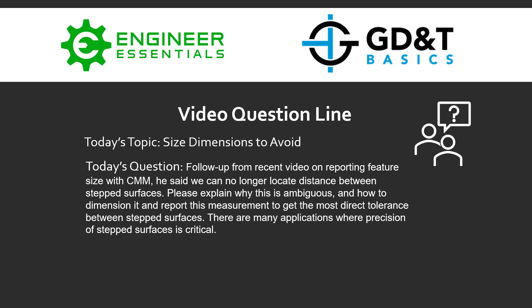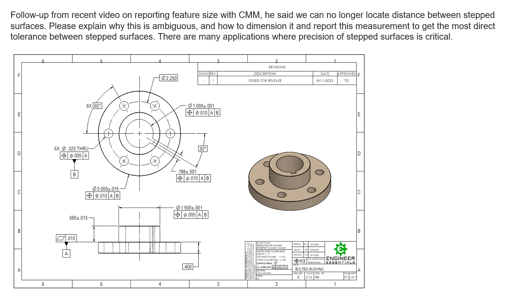Here we can see a sample drawing — a very simple drawing — but we see a stepped surface being controlled with a size dimension. As I mentioned in the previous video, this is no longer legal per the ASME Y14.5 2018 standard. They take a very direct stance and say that dimensioning between stepped surfaces is ambiguous. The issue existed well before ASME pointed it out, but in 2018 they take a stance and say: stop doing this, it leads to too many ambiguous situations, and there are much better alternatives.